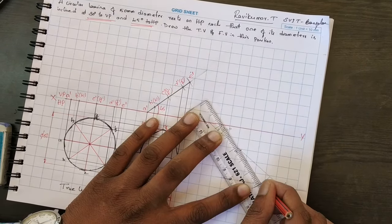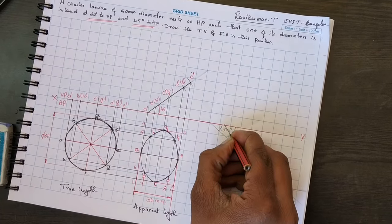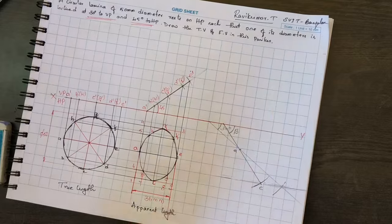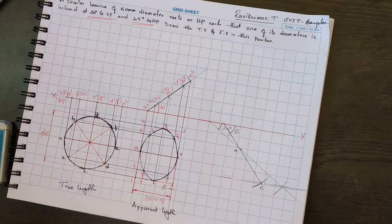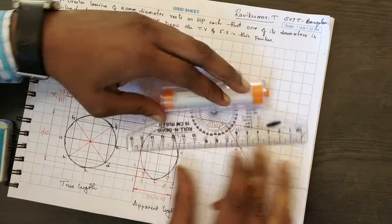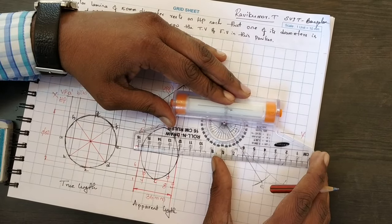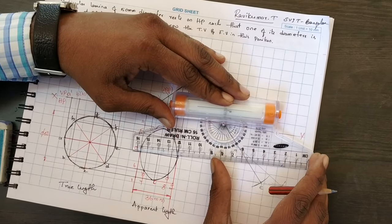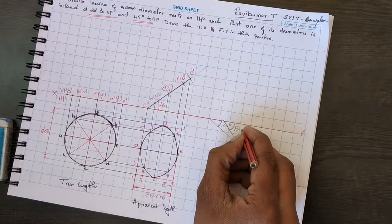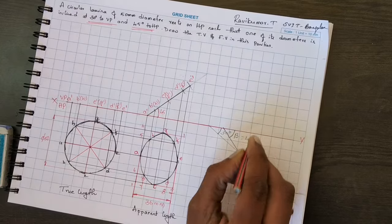Extend this point upward and that gives you beta. So how much is beta? It should be around 45 degrees — you are getting approximately 48 degrees.